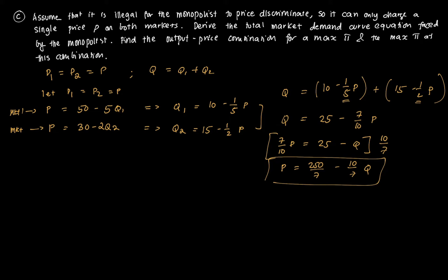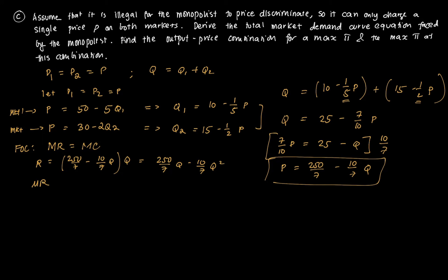To find the profit-maximizing quantity and price, we use the condition MR equals MC. Revenue equals (250 over 7 minus 10 over 7 times Q) times Q, giving 250 over 7 times Q minus 10 over 7 times Q squared. Marginal revenue is the derivative with respect to Q: MR equals 250 over 7 minus 20 over 7 times Q.